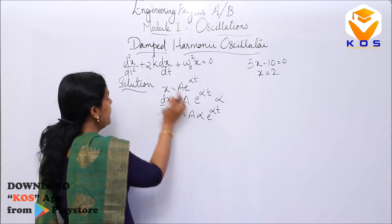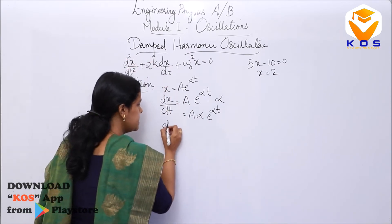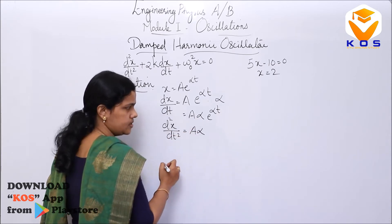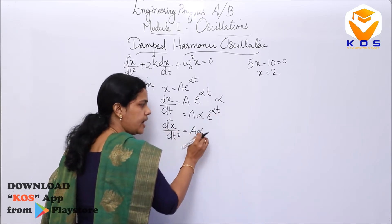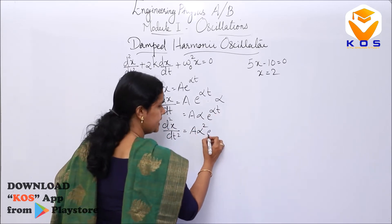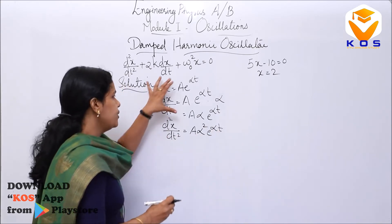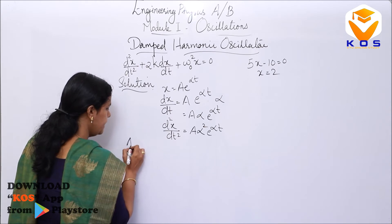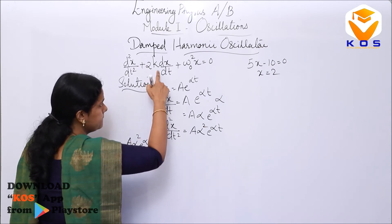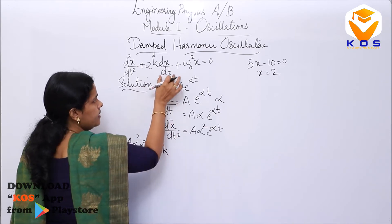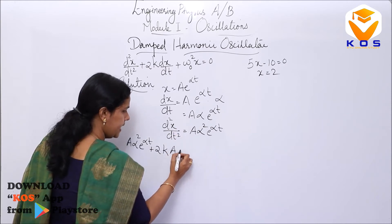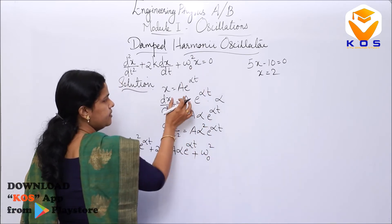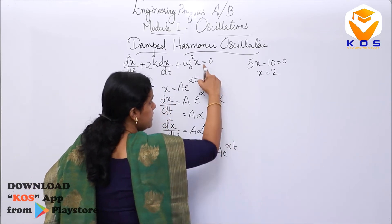Now for the second-order derivative, d²x/dt²: since A·α is a constant, differentiating A·α·e^(αt) again gives A·α²·e^(αt). So substituting into the equation, the first term is A·α²·e^(αt), plus 2k times A·α·e^(αt), plus ω₀² times A·e^(αt), equal to zero.